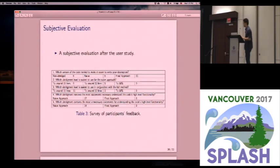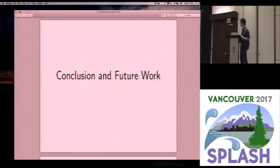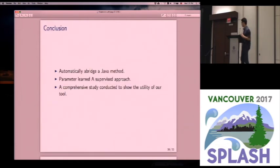And finally, we also ask the users to provide some subjective evaluation of our tool. It turns out that our tool is preferred by most of the participants. And finally, I will draw the conclusion. So basically, we proposed a method that can automatically abridge a piece of Java method, and we use the supervised learning approach to tune the parameters in this formalization, and we also conduct a comprehensive user study to show the utility of our tool.